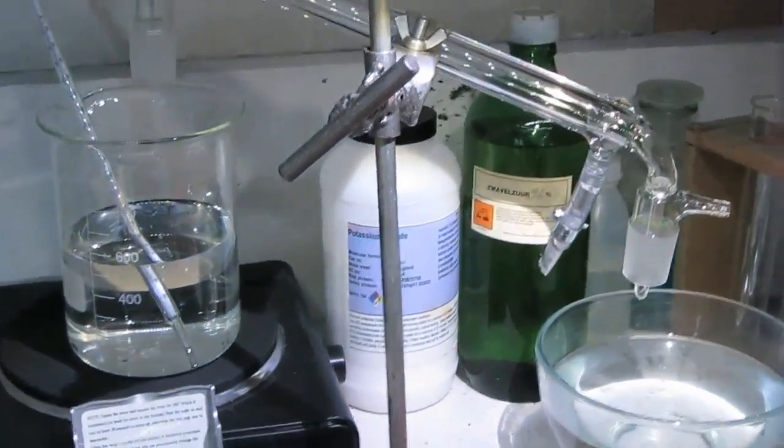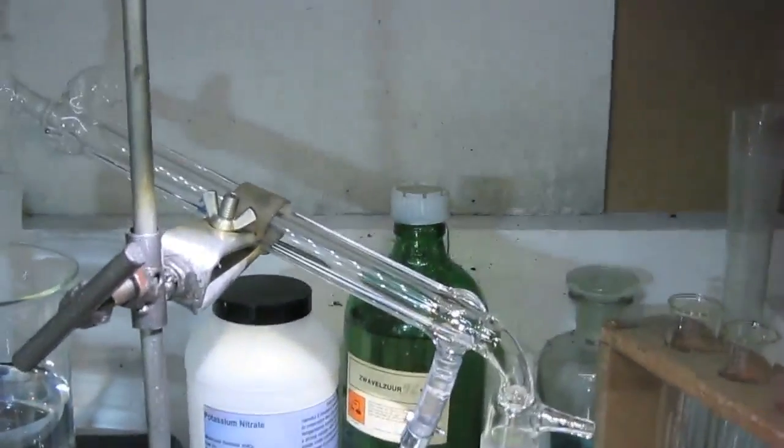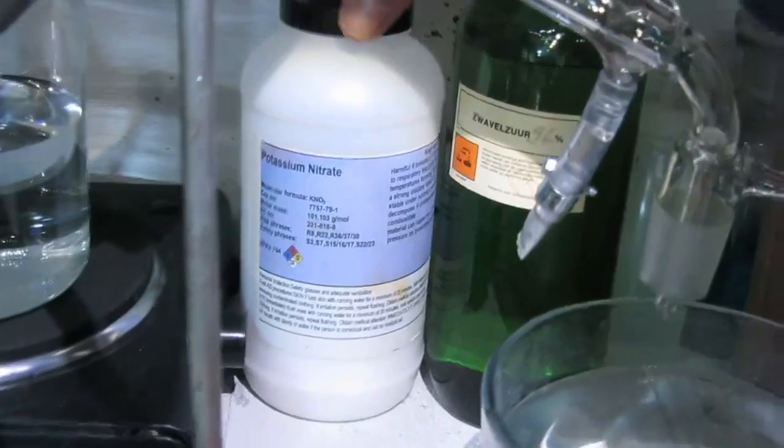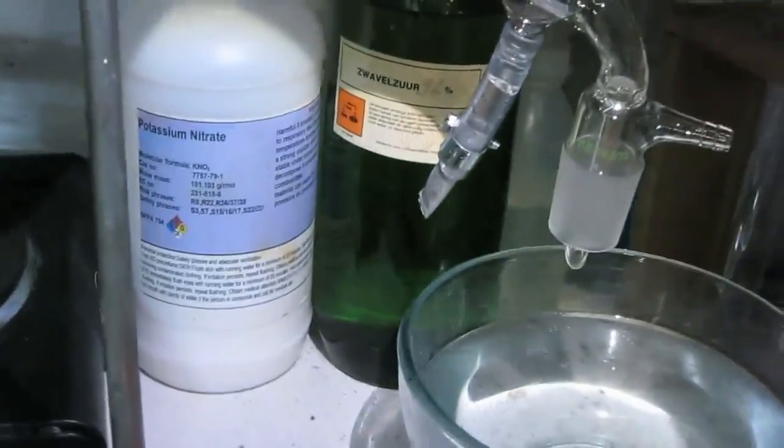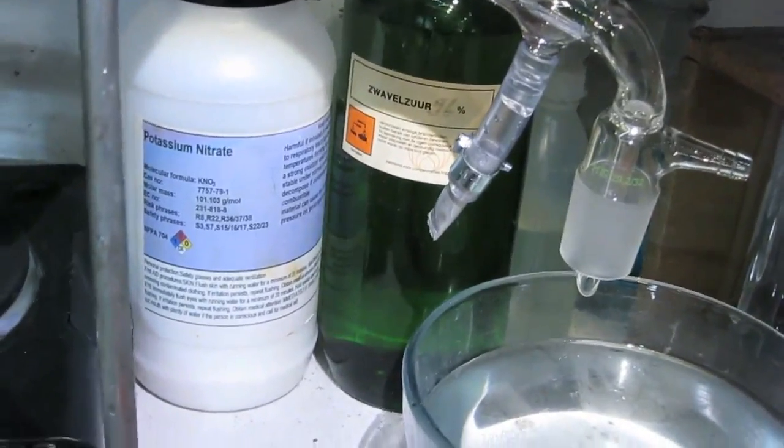The next experiment. I'm going to make nitric acid of a high percentage over 90% from potassium nitrate KNO3 and concentrated H2SO4, concentrated sulfuric acid.